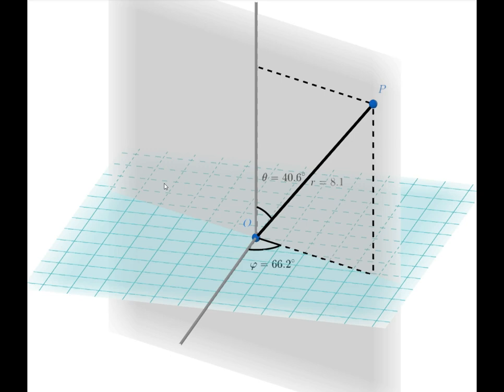On the other hand, we limit the value of theta from zero to pi. And in that way, we remove any ambiguity about the angular location of our point. There will always be an absolutely unique combination of coordinates with this system by limiting the values this way.